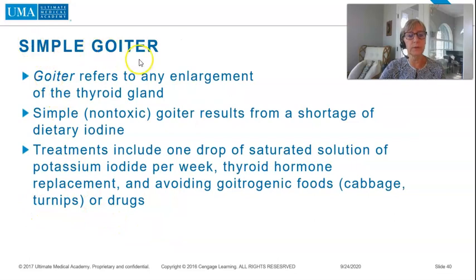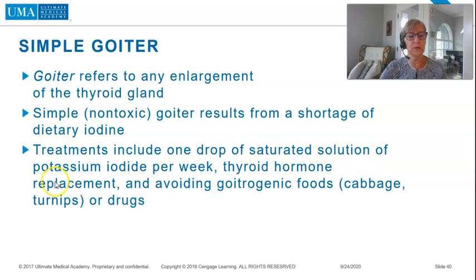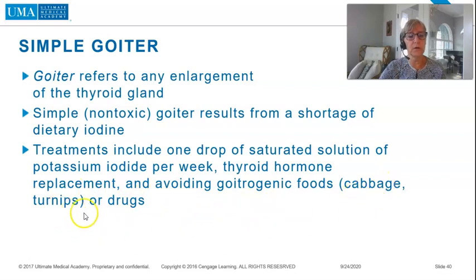Simple goiter refers to any enlargement of the thyroid gland and results from a shortage of dietary iodine. Treatments include one drop of saturated solution of potassium iodide per week, thyroid hormone replacement, and avoiding goitrogenic foods such as cabbage, turnips, or certain drugs.